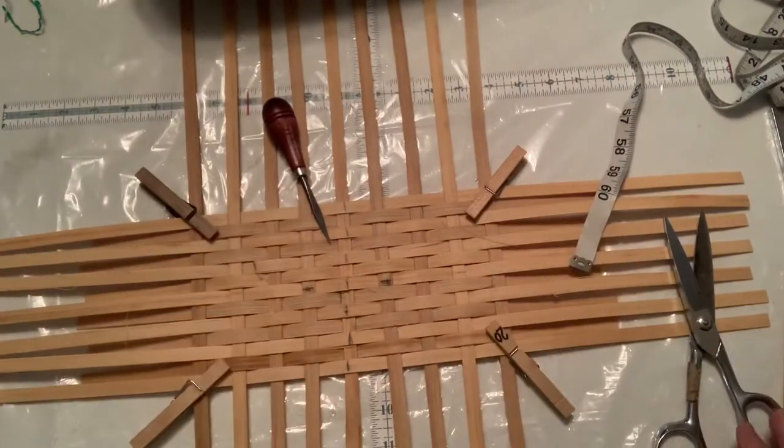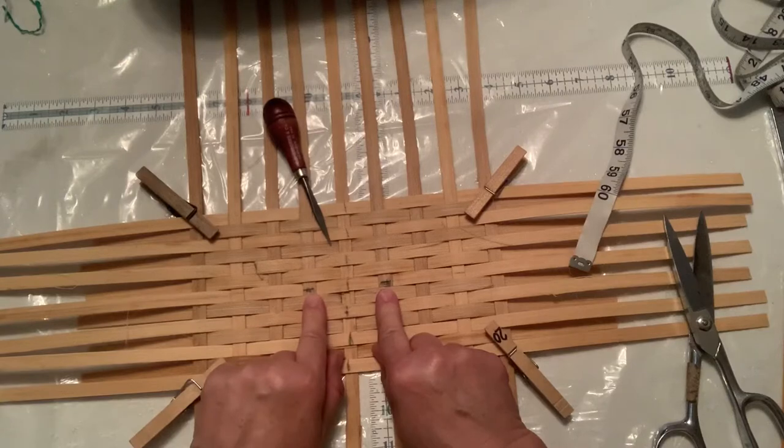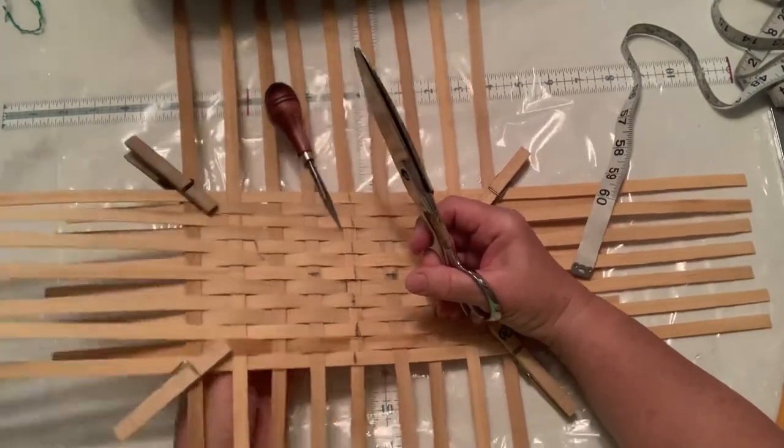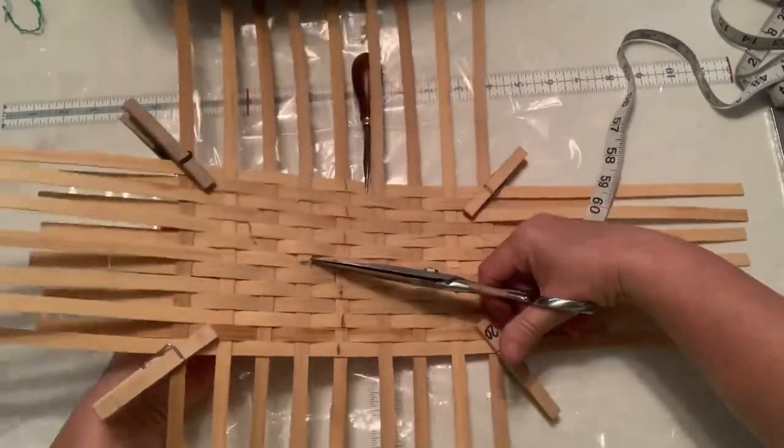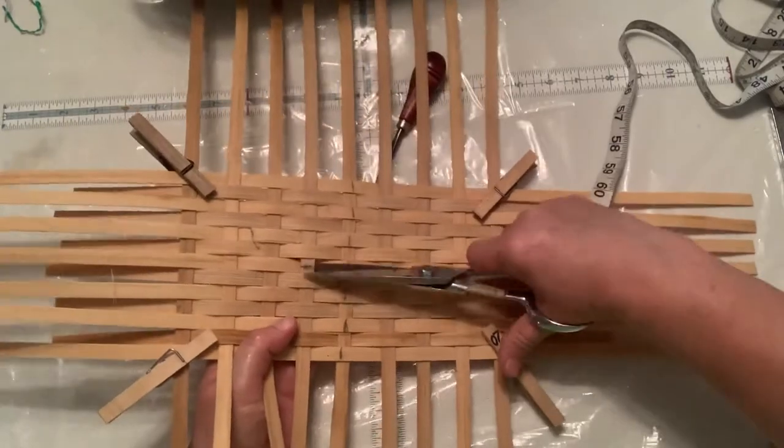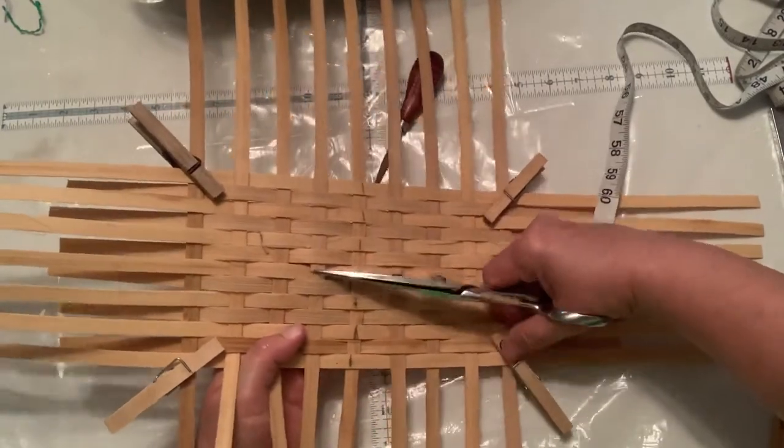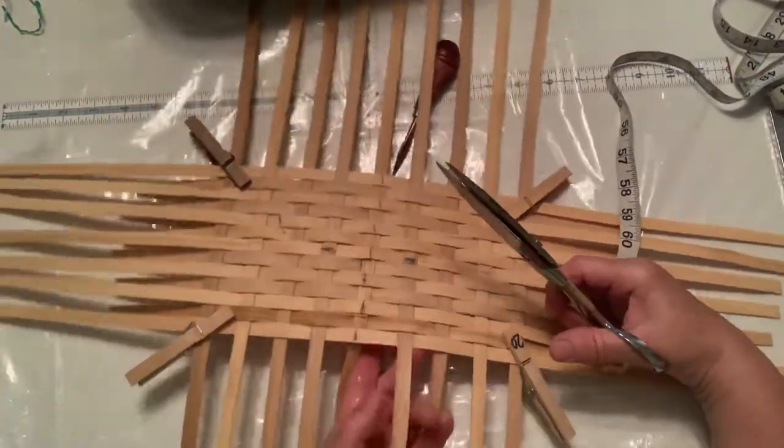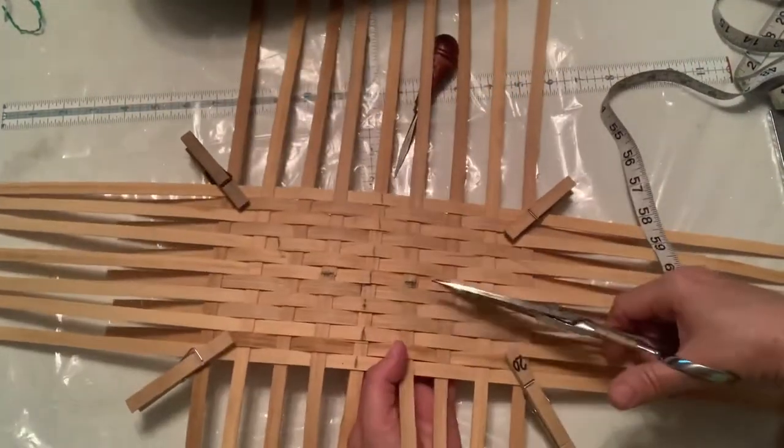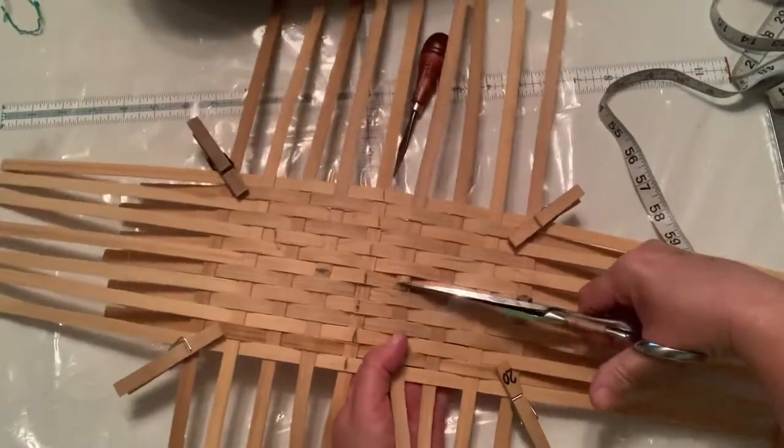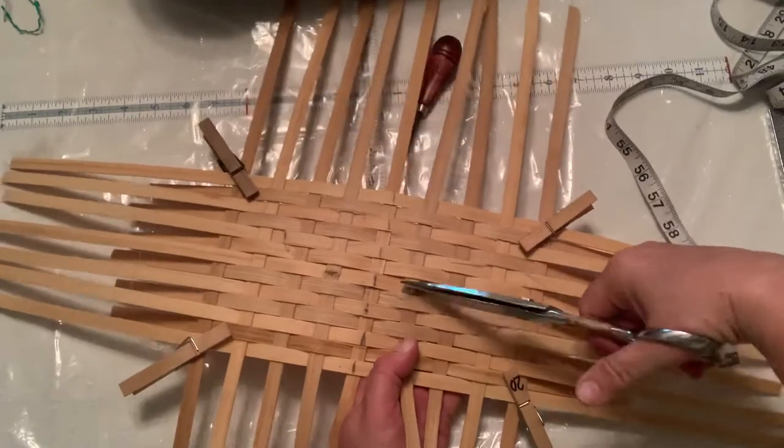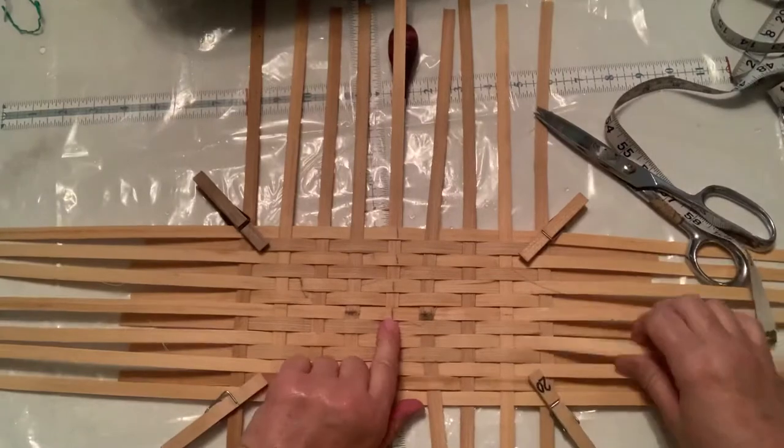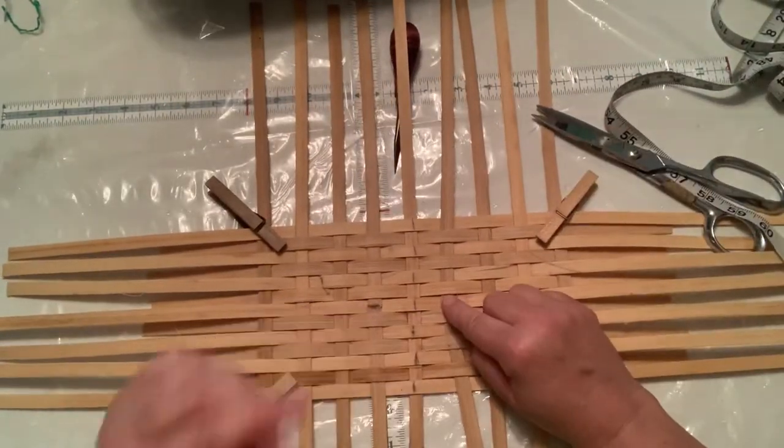The one on either side of that, the pencil marks go the other way, so you're going to actually cut them. It's okay to kind of lift it. You're going to cut them right on the center marks, so those are cut - the center one and the ones on either side.